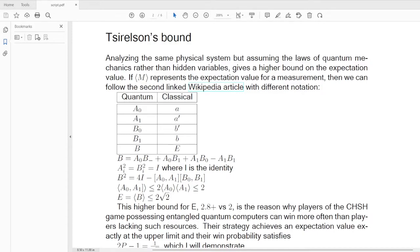Analyzing the same physical system, but assuming the laws of quantum mechanics rather than hidden variables, gives a higher bound on the expectation value. If M represents the expectation value for a measurement, then we can follow the second linked Wikipedia article with a different notation.